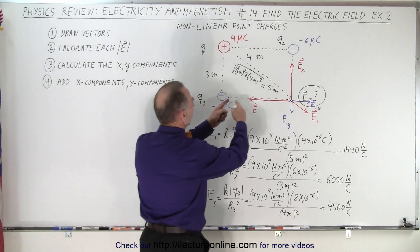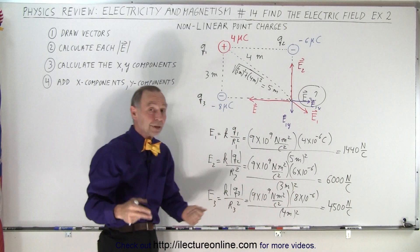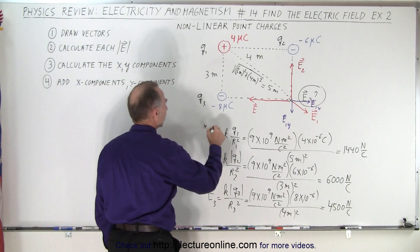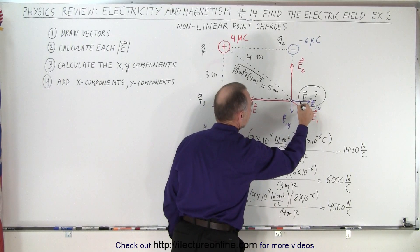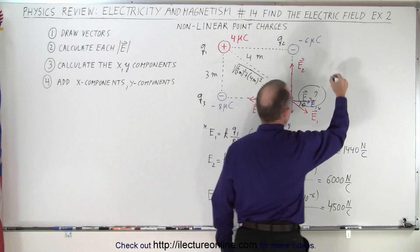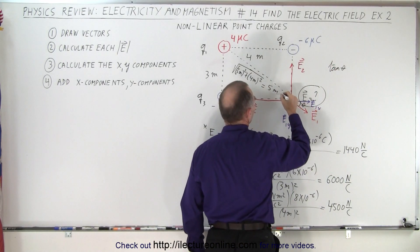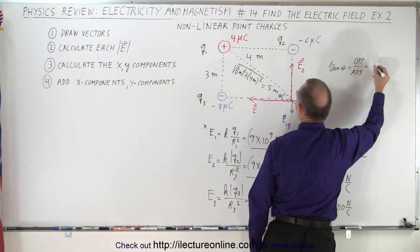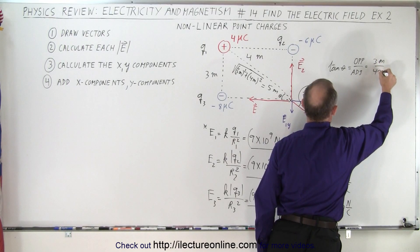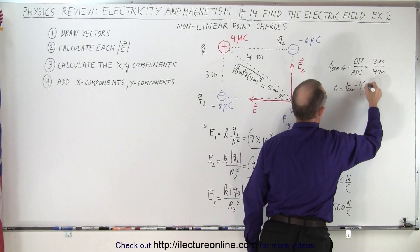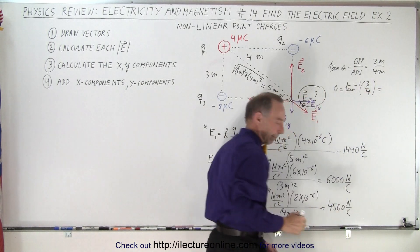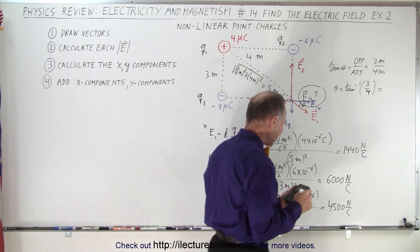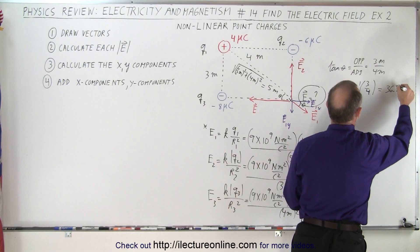Now, for E1, we need to find the X and Y components, which means we need the angle. The tangent of theta — this angle is the same as the angle in the rectangle — equals the opposite side divided by the adjacent side, which is 3 meters over 4 meters. That means theta = arctan(3/4) = arctan(0.75) = 36.87 degrees.